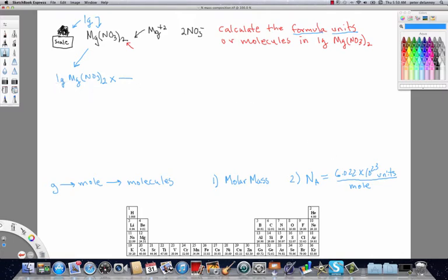So coming back up to the problem, we've got one gram Mg(NO3)2. And in the first step, we want to go from mass to moles. So we're going to actually be dividing by the molar mass to achieve that. So I'm going to put one mole in the numerator or the top of this fraction.